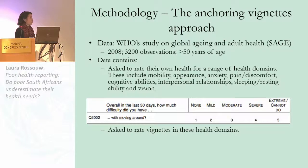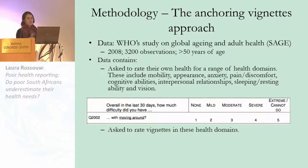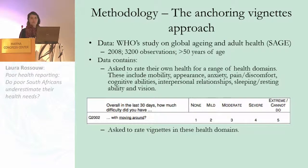An example question asks: 'Overall in the last three days, how much difficulty did you have with moving around?' where 1 is none and 5 is extreme, so a higher value indicates a worse health state. This question is asked across various health domains including mobility, appearance, anxiety, pain, vision, sleeping, and energy.